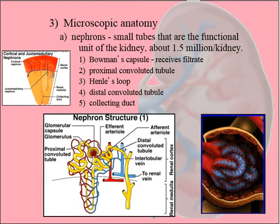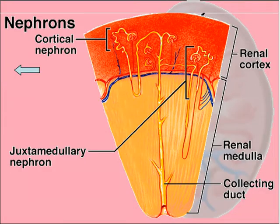Let's take a look at the microscopic anatomy. If we examine a kidney with a microscope, we find that each kidney is made up of about a million and a half little tube structures that we call nephrons — about a million and a half per kidney.